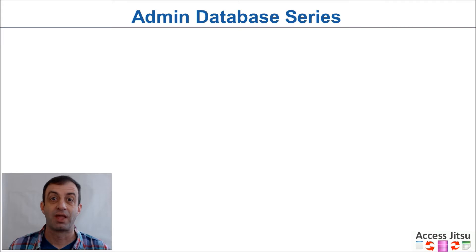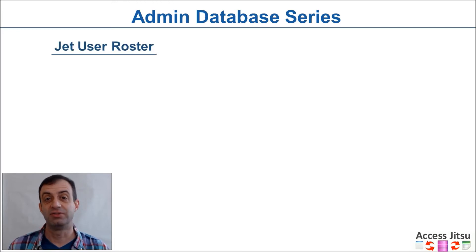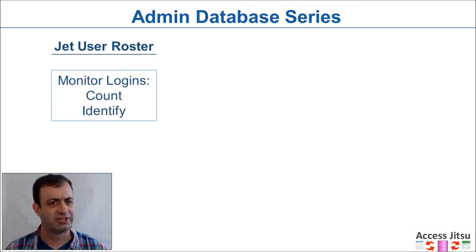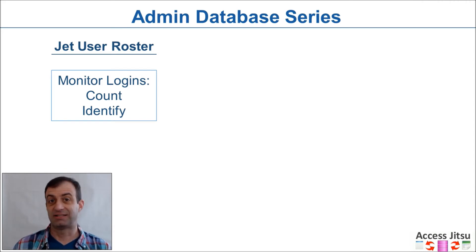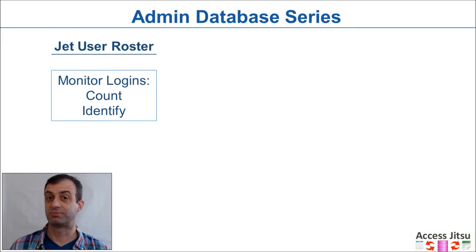So let's take a look at what we're going to cover. Our first topic is going to be monitoring logins, and we're going to start with the built-in functionality that Microsoft Access provides us. Microsoft provides a JET user roster that will allow us to see who's logged into a database and some limited information about them, such as their machine name and the Access user ID, which is at this point not terribly useful in version 2007 and forward. Of course, with every approach, there are some pros and cons.